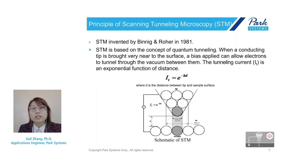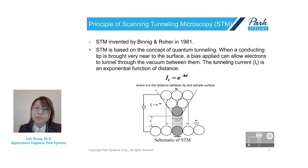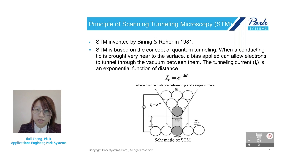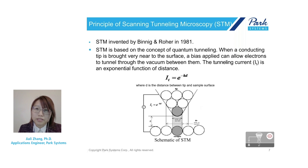Let's first look at the basic principle of STM. STM is one of the application modes in the scanning probe microscopy family. It was invented in 1981 by Binnig and Rohrer at IBM Zurich, and five years later they were awarded the Nobel Prize in physics for its invention. STM is based on the concept of quantum tunneling with a sharp, conducting tip brought very near — usually within 10 ångströms — to the conductive sample surface. A bias applied between the two allows electrons to tunnel through the vacuum between them. The resulting tunneling current is a function of tip position, applied voltage, and the local density of states of the sample.